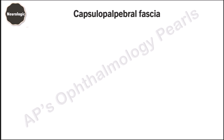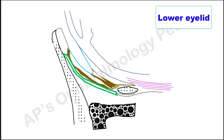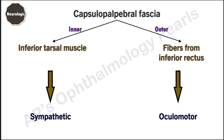The capsulopalpebral fascia is formed by the lower lid retractors. The inner division of the capsulopalpebral fascia is composed of the inferior tarsal muscle, while the outer division is composed of muscle fibers from the inferior rectus. The inferior tarsal muscle forms the inner part of the capsulopalpebral fascia, and the fibers derived from the inferior rectus are also shown here. The inferior tarsal muscle is supplied by the sympathetic nervous system, while the fibers derived from the inferior rectus are supplied by the oculomotor nerve.